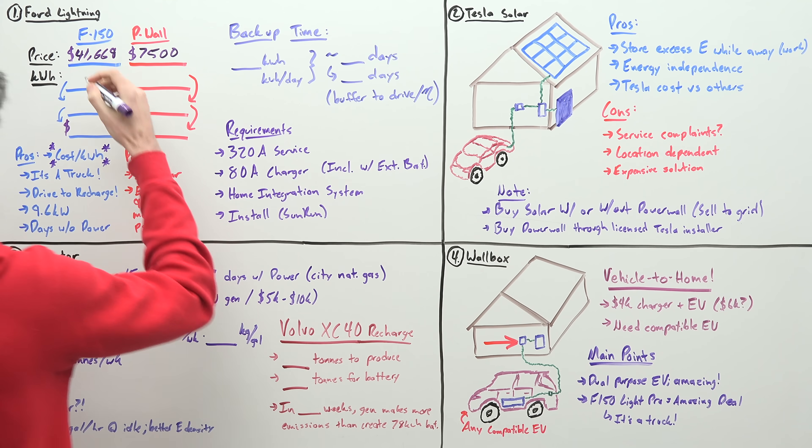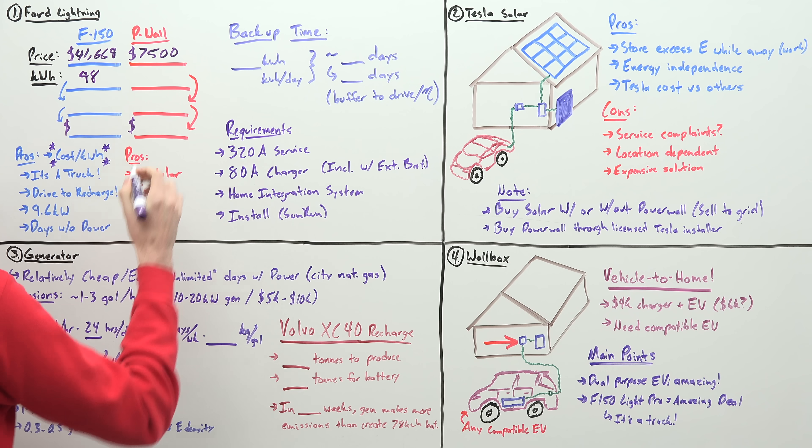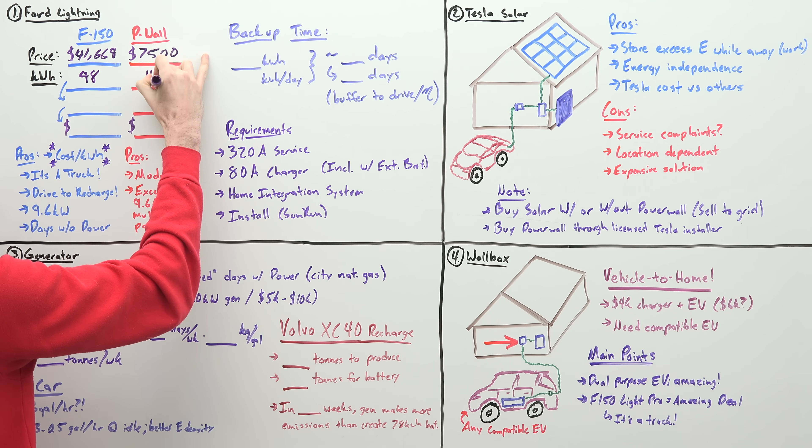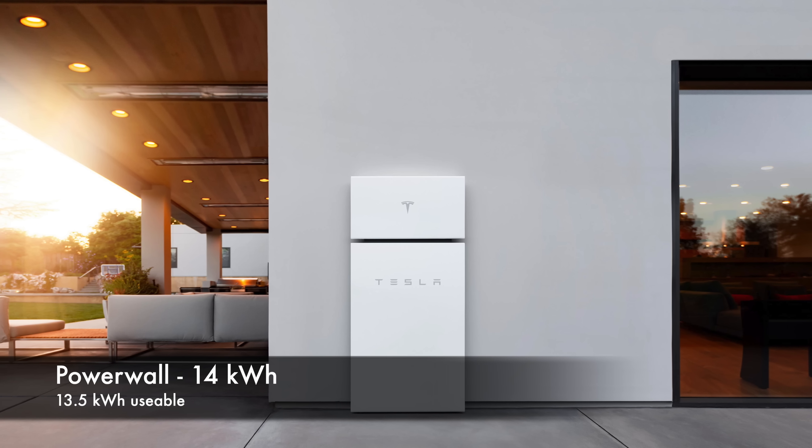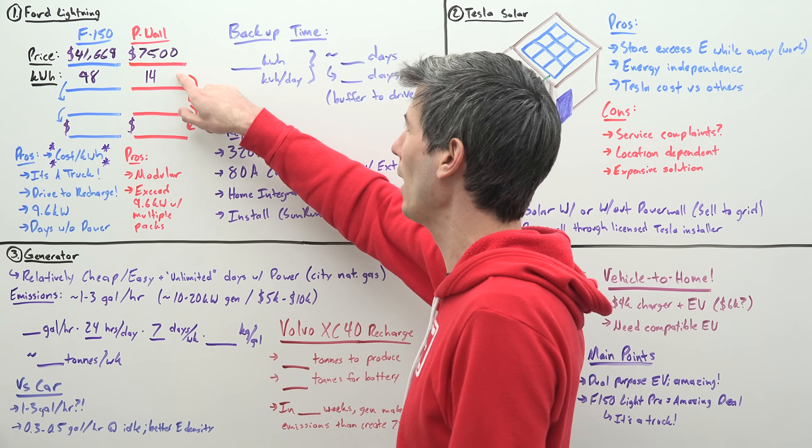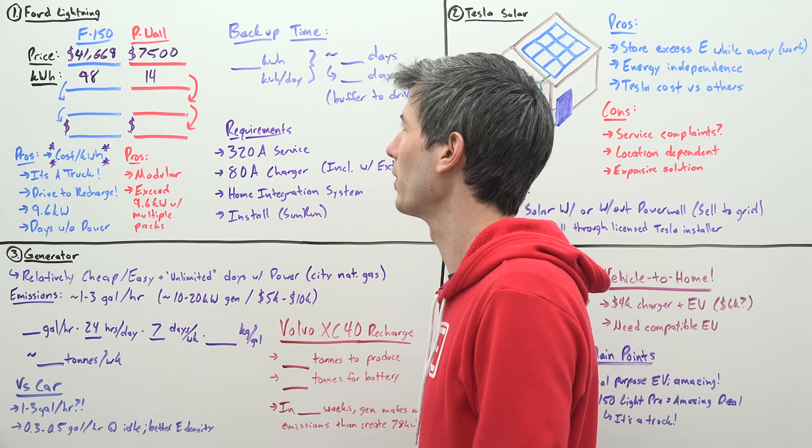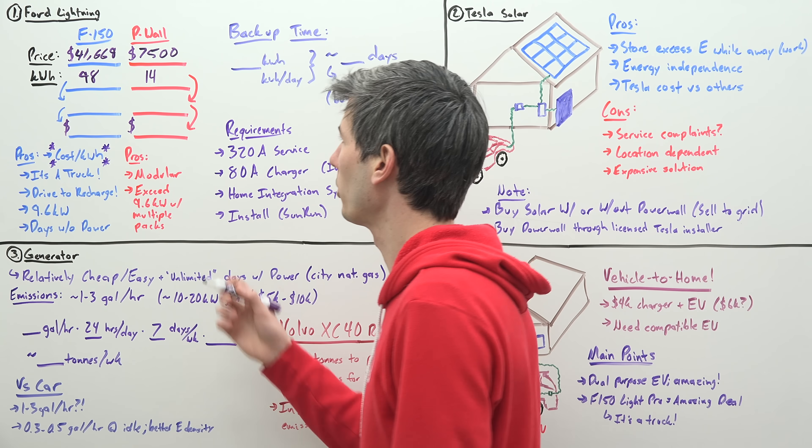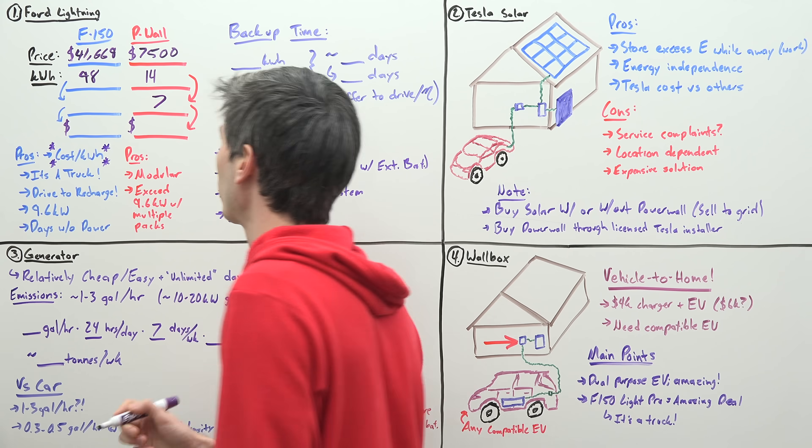So how much energy do we have stored in each of these? The F-150 Lightning Pro has a 98 kilowatt hour battery, and the Tesla Powerwalls are 14 kilowatt hours, 13.5 of which you can use for backup power energy. How many Powerwalls do we need to have the equivalent capacity of a Ford F-150 Lightning Pro? That would be 98 divided by 14. That gives us seven Powerwalls.